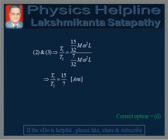Now, dividing equation 2 by equation 3 we get T1 by T2 equals 15 by 7, which is the answer to the question. Therefore, the correct option is D. This completes the answer to the question.